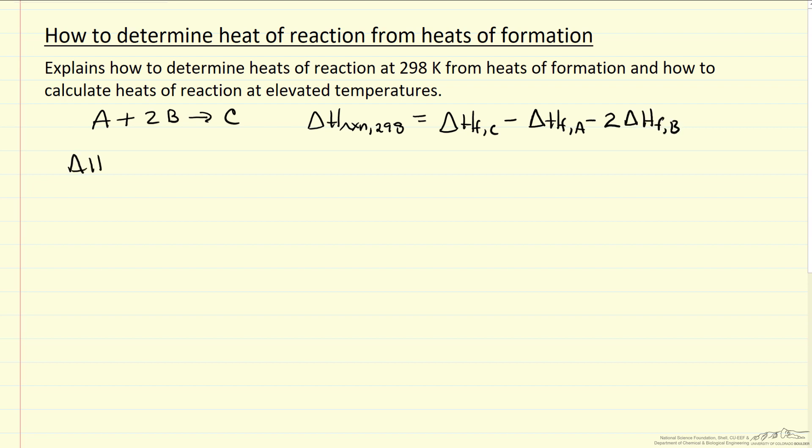And now if we want heat of reaction at some other temperature, since tables are only available at 298K, we can calculate that by the heat of reaction at 298 plus integral from 298 to the temperature that we're interested in, a summation of stoichiometric coefficients times heat capacities, which in general would be a function of temperature.